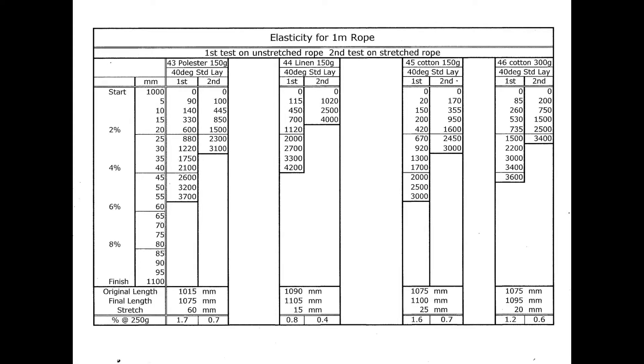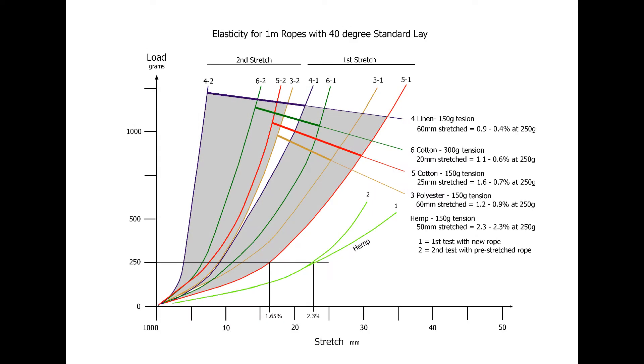Elasticity for 1mm ropes with 40 degrees standard lay. Testing cotton, linen, and polyester with variables fixed at 12.5% initial thread reduction, 1 to 3 strand to thread ratio, 150 gram tension weight, and using similar diameter cords gave the following results. 10% was the minimum stretch available. Loads were applied up to 3 to 4kg, well beyond practical value, to see what would happen.